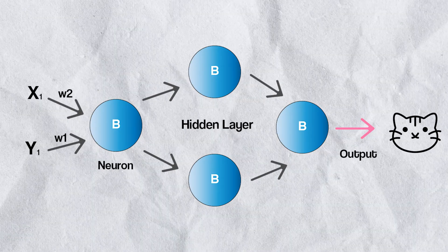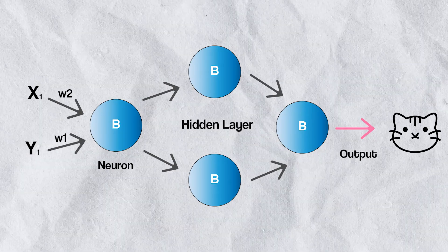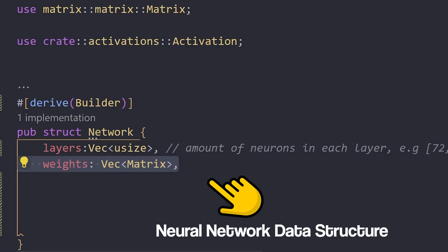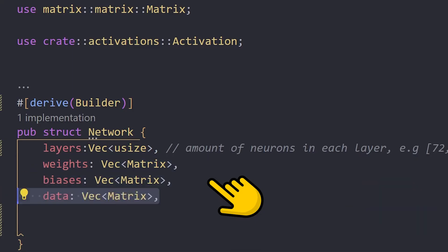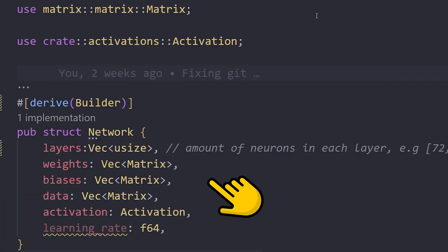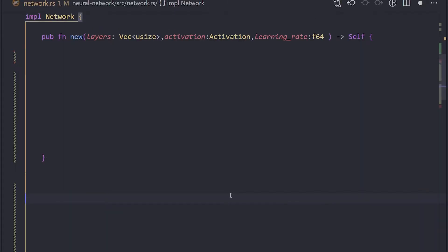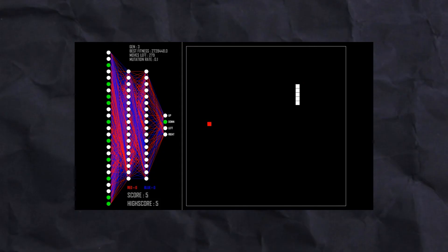Now that it's all out of the way, let's program our neural network. This is our network data structure. The layers are represented as a vector of the amount of neurons per layer. Weights, biases, and inputs are stored as a vector of type matrix. And finally, we've got our activation function and learning rate.